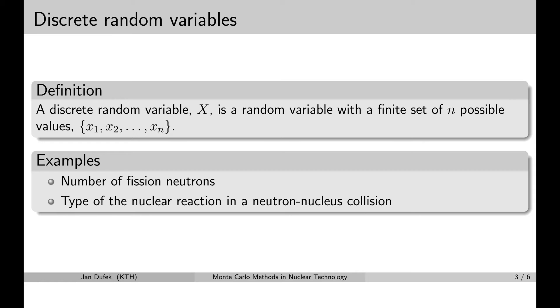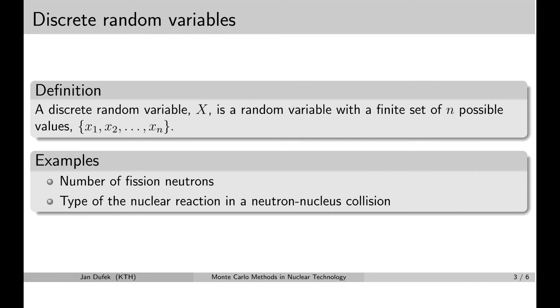Another example of a discrete random variable is the type of nuclear reaction in a collision of neutrons with some nucleus. So, let's imagine we have a nucleus, for instance, uranium-235 and then we have a neutron flying towards the nucleus.